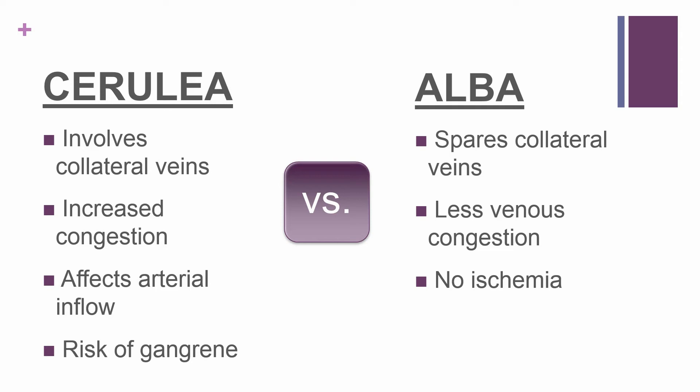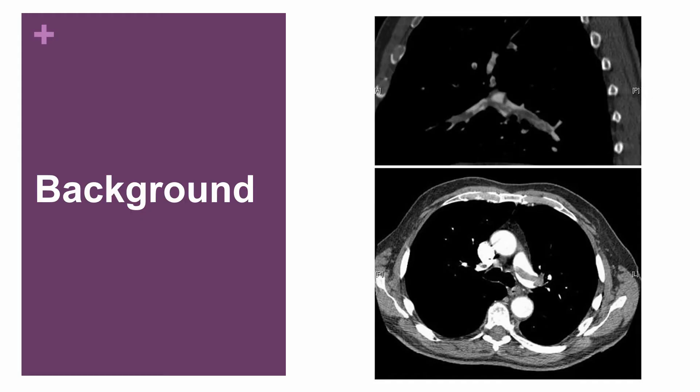Alba dolens spares the collateral veins. Because of that, cerulea leads to increased congestion, hindering arterial inflow and the risk of gangrene. If the occlusion affects the capillaries, that's often irreversible, and that's the bigger issue. From a background standpoint, there are over 600,000 cases of VTE a year, and about 50 percent of those, if left untreated, can progress to pulmonary embolism.